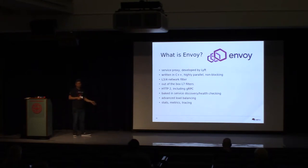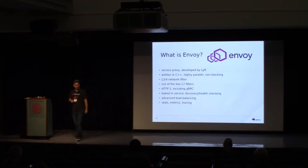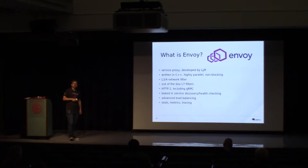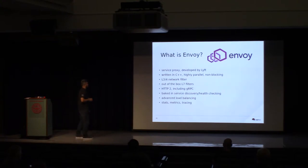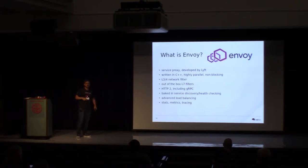What is Envoy? Envoy is a proxy developed by Lyft. It's open source, written in C++, so it's supposed to be light and fast. It's a network filter that comes out of the box with L7 filters — that's why it can do advanced load balancing based, for example, on the headers of the request. HTTP 2.0 is a first-class supported protocol, including gRPC. It has embedded service discovery, health checking, stats, metrics, and tracing — all embedded into Envoy.